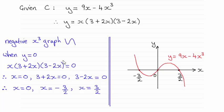And then for where it crosses the x-axis we let y equal 0. And when y equals 0, if we take the factorised version which we got in the previous part of the question,